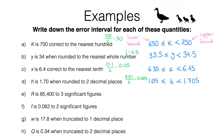For question e, r rounds to 85,400 to three significant figures. In this case, rounding to three significant figures meant rounding to the nearest hundred. Taking 100 and dividing by 2 gives 50. Subtracting 50 gives the lower bound of 85,350 and adding 50 gives the upper bound of 85,450. So the error interval is 85,350 ≤ r < 85,450. Any value of r in this interval would round to 85,400 correct to three significant figures.